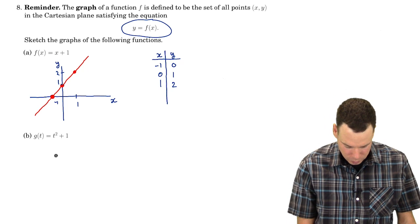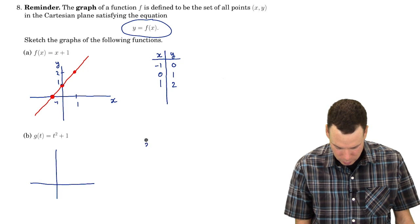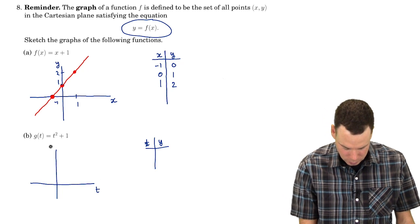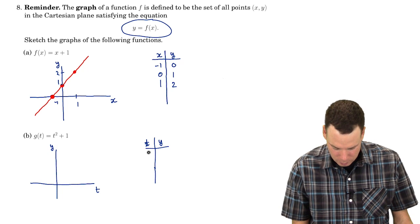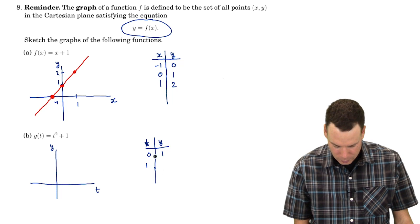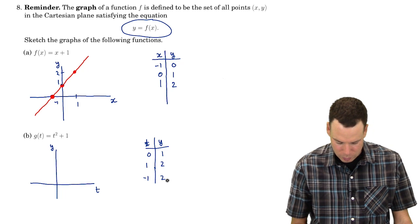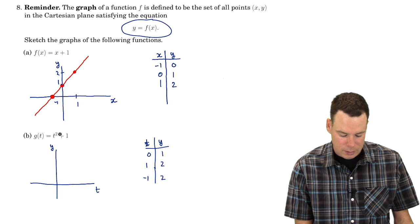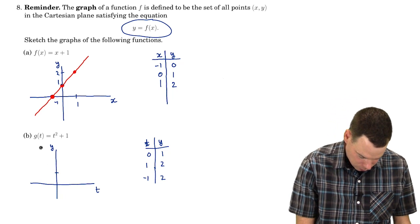So how about the next one? g(t) equals t squared plus 1. Again, you could plot a few points if you wanted. There's our t-axis and there's y, our output of our function. And maybe you plug 0 in and you get 1 coming out. Maybe 1 in and you would get 2 coming out. Maybe even pop negative 1 in and you get 2 coming out as well. If you wanted to do this and plot a few points or if you just wanted to notice that it's a squaring function, so it's a parabola, but it's been shifted up one unit. So it looks like this.